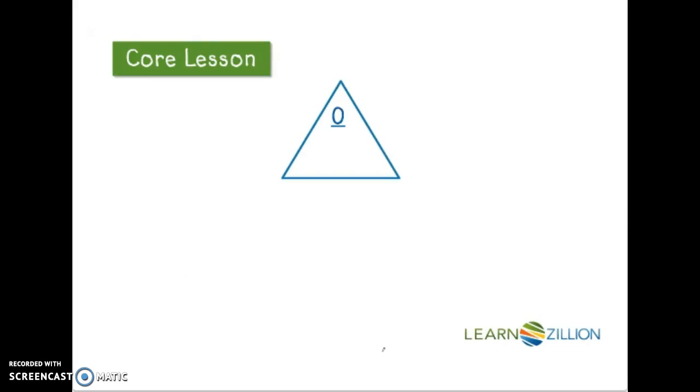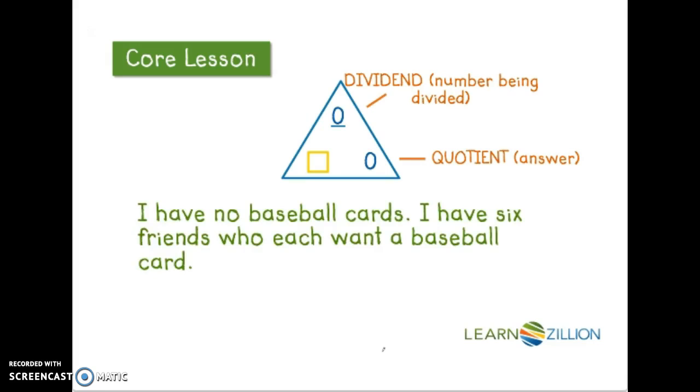Let's take a look at this fact family. Here, 0 is the dividend, or the number being divided. Anything we divide it by, or any divisor, will result in us still having an answer or quotient of 0. For example, I have no baseball cards. I have 6 friends who each want a baseball card. When I take my 0 baseball cards and divide them by 6, each friend will still get 0 baseball cards. 0 divided by any number will give you an answer of 0.